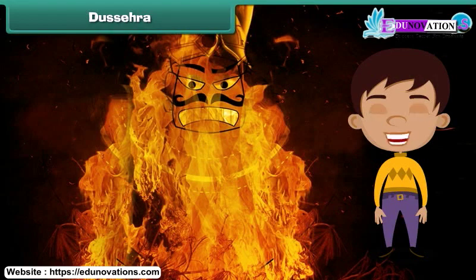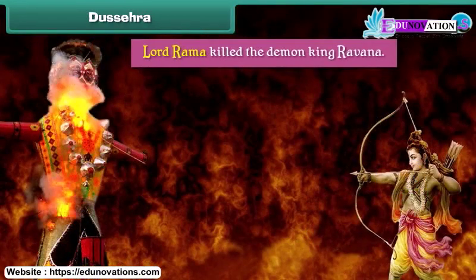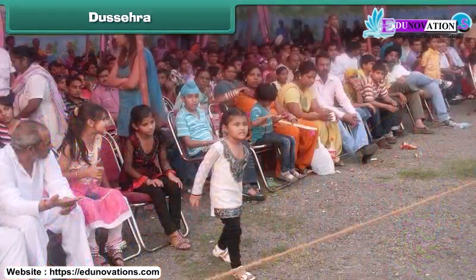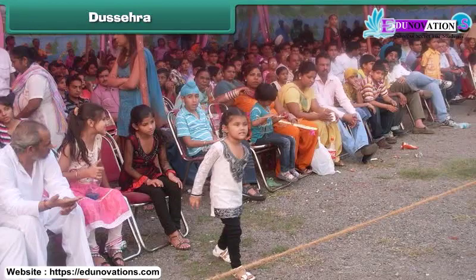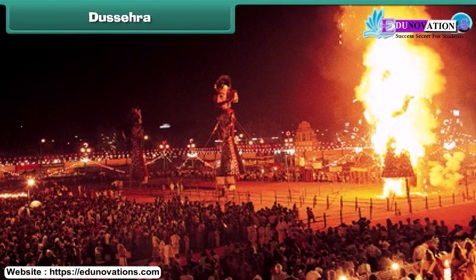It is believed that on this day Lord Ram killed the demon king Ravan. People gather in a large field in the evening and burn effigies of Ravan, his brother Kumbhkaran, and son Meghnath.